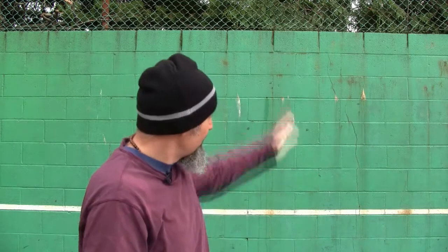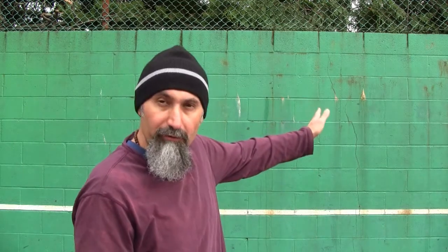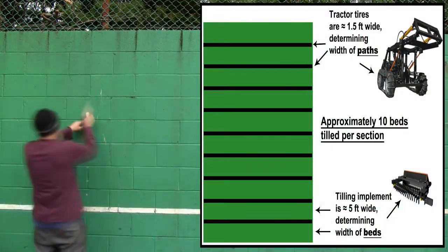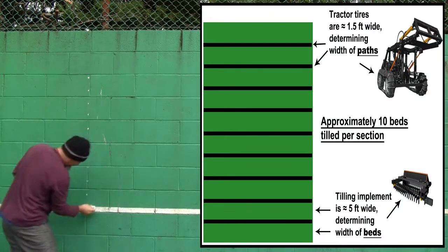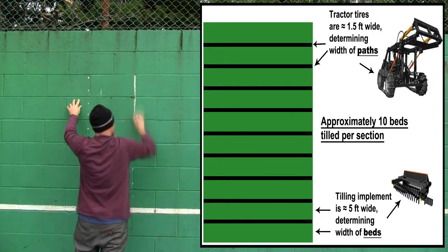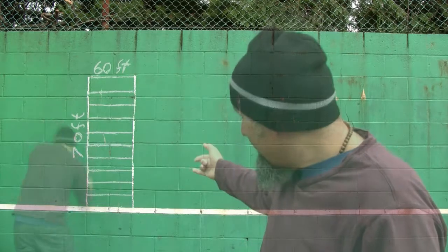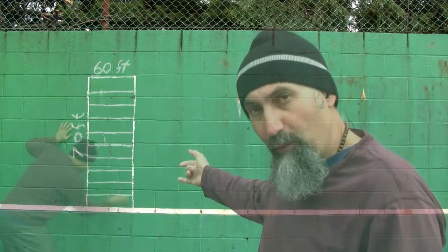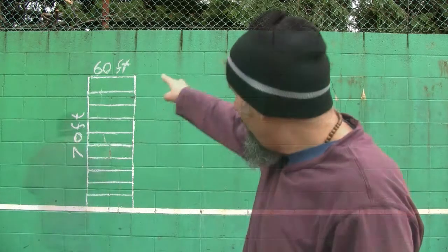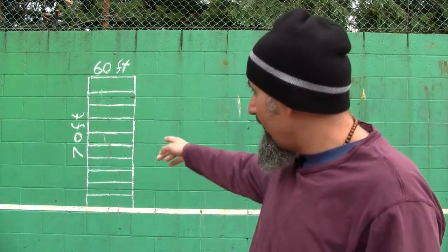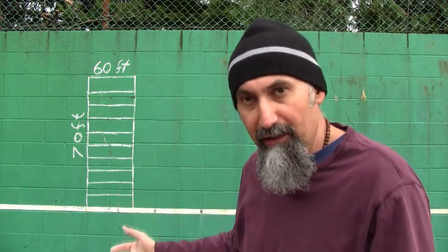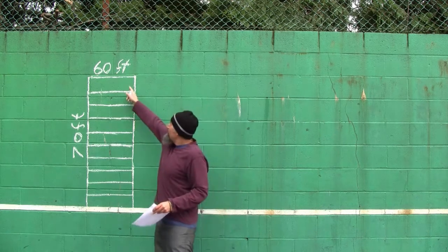We've set up a sample section — obviously this is not to scale. We have 10 different beds; each bed is about 5 feet wide and 60 feet long, and the whole dimensions of that section are 70 feet by 60 feet, again not to scale.